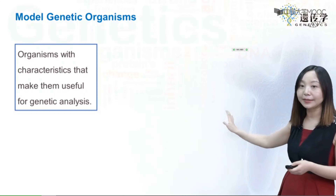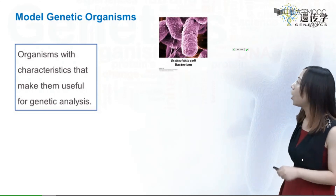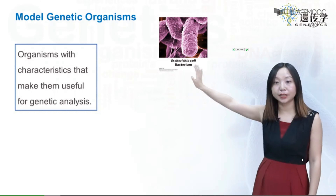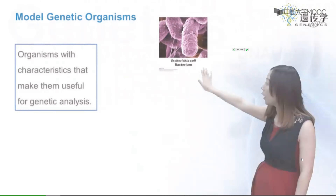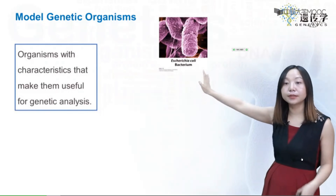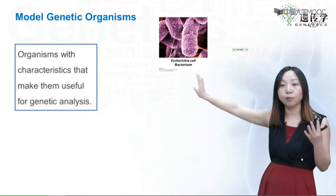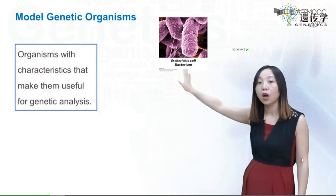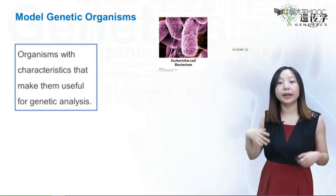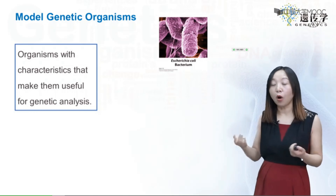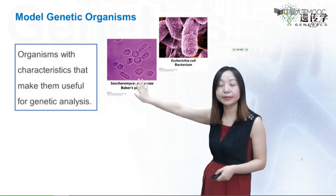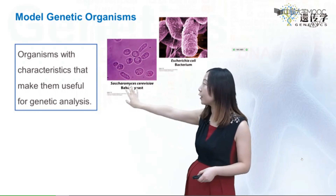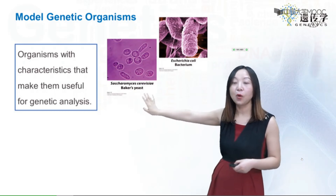Let's look at some examples of these model organisms. The first is E. coli, which is a prokaryotic bacterium. It's probably the earliest genetic model organism used in studies, and many labs still use E. coli for lab trials. Then we have the simplest eukaryotic model organism, Saccharomyces cerevisiae, or Baker's yeast.